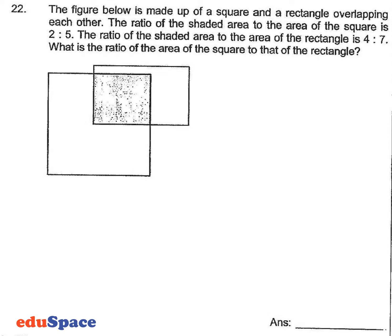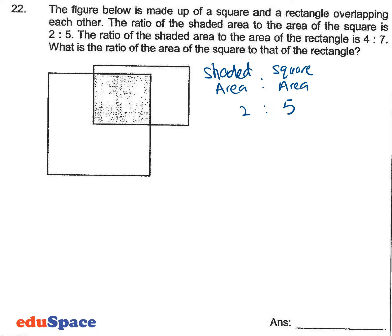The figure below is made up of a square and a rectangle overlapping. The ratio of the shaded area to the area of the square is 2 to 5. The ratio of the shaded area to the area of the rectangle is 4 to 7.